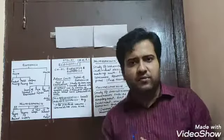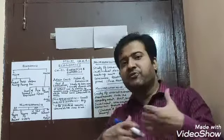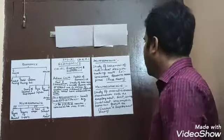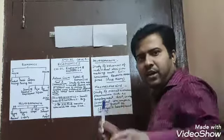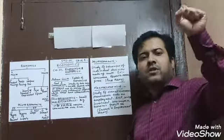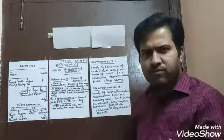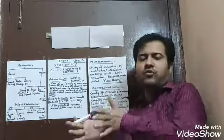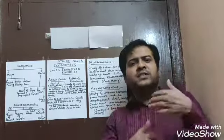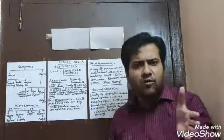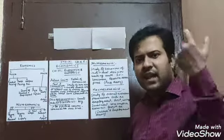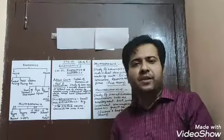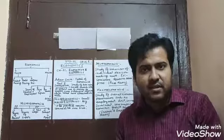Microeconomics and macroeconomics are different branches of the study of economics, with different fields. Microeconomics is the study of the economic condition of an individual, a firm, or resource owners. When we analyze the financial condition of an individual, a society, and an organization, we find that microeconomics is the study of the behavior of human beings — what a human being decides and how they react in an economy.